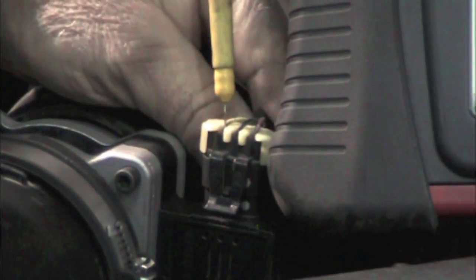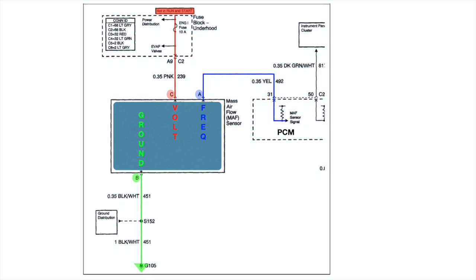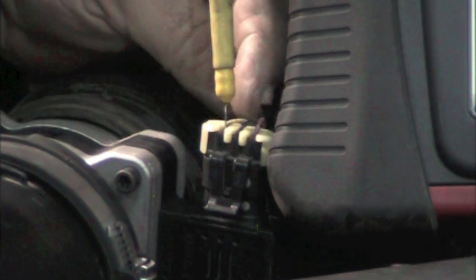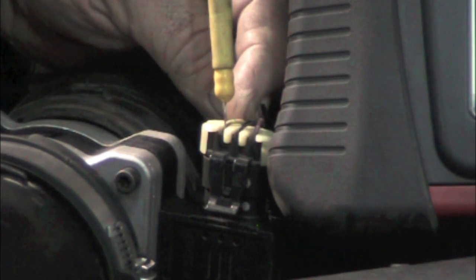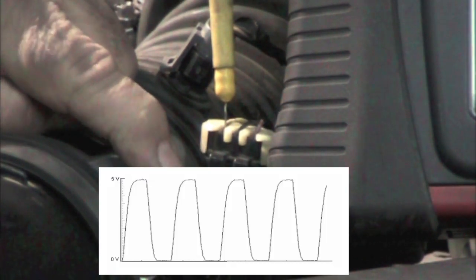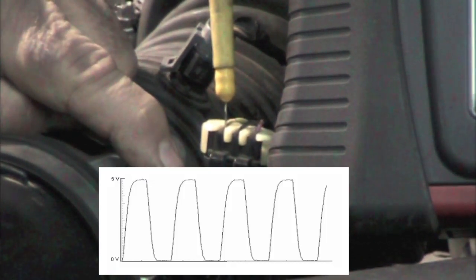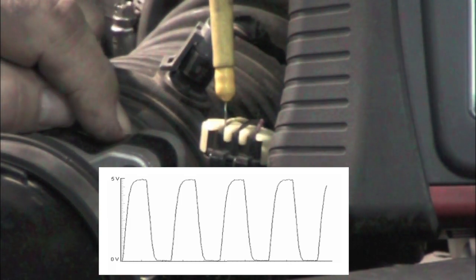In the mass air flow connector you're going to have three wires. One is going to be a ground, another is going to be 12 volts coming from the battery, and the other one is going to be the signal wire. The ground should be ground, the battery generates the 12 volts, and the mass air flow is a frequency generator — it is going to generate a signal and send that out on the signal wire.